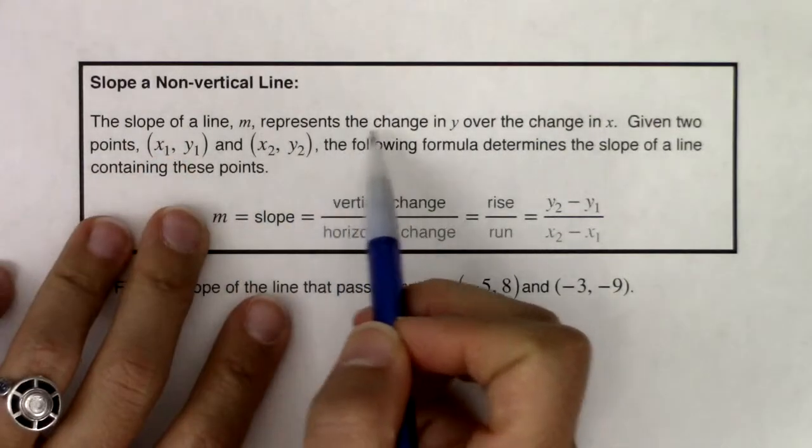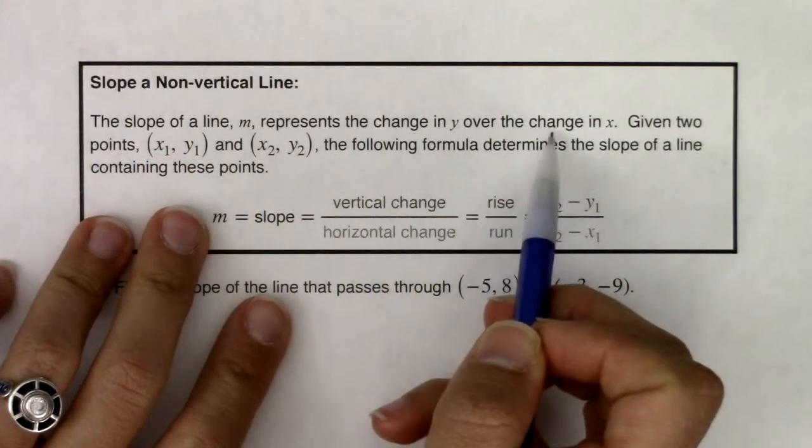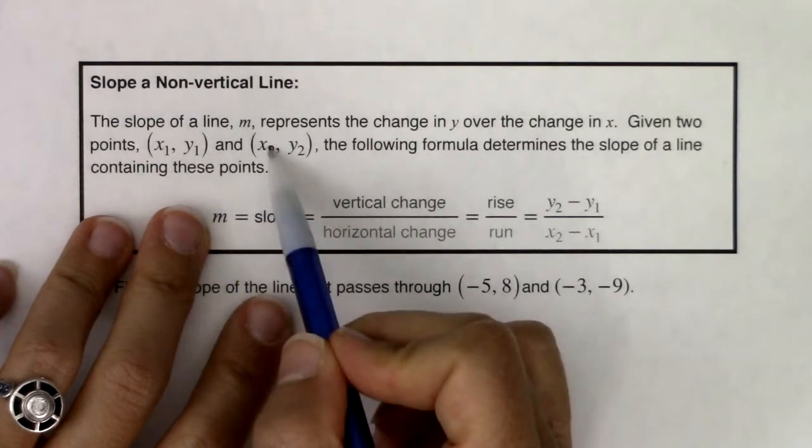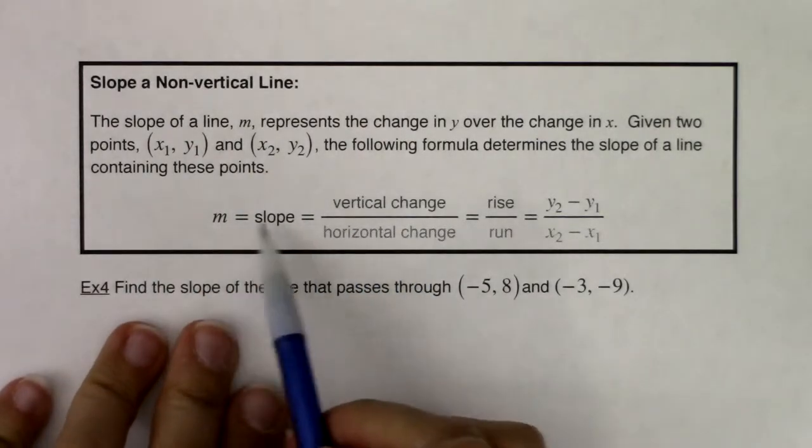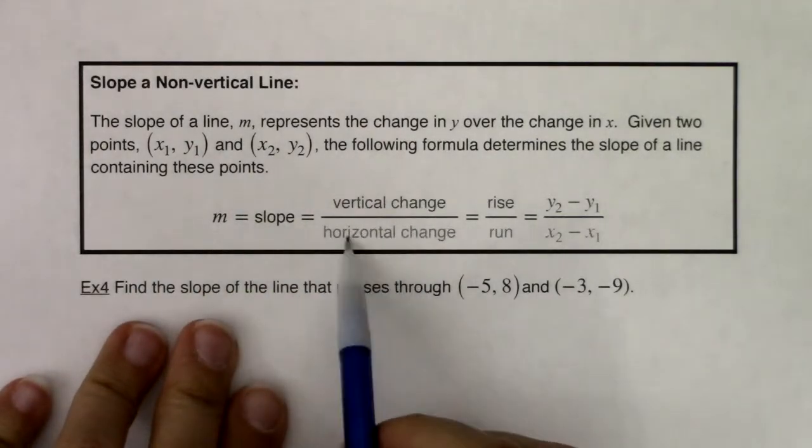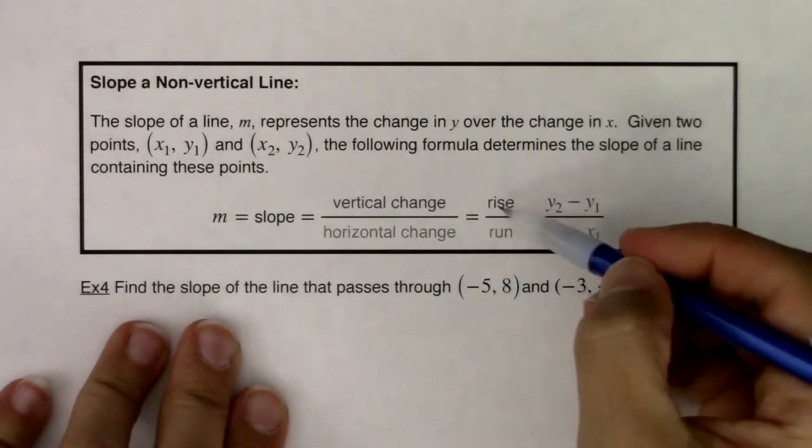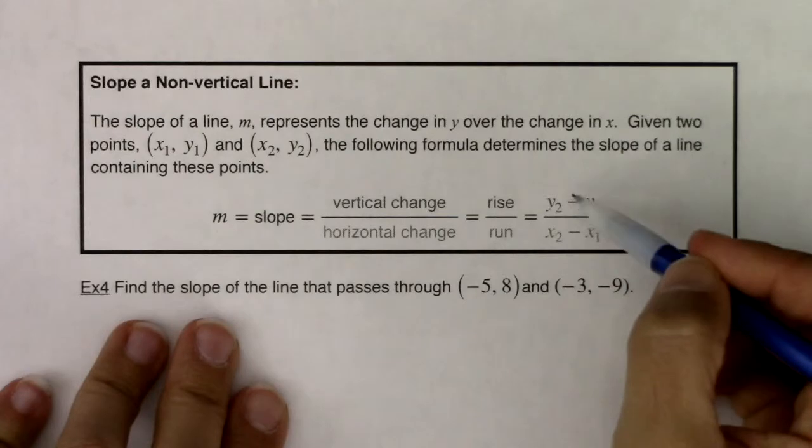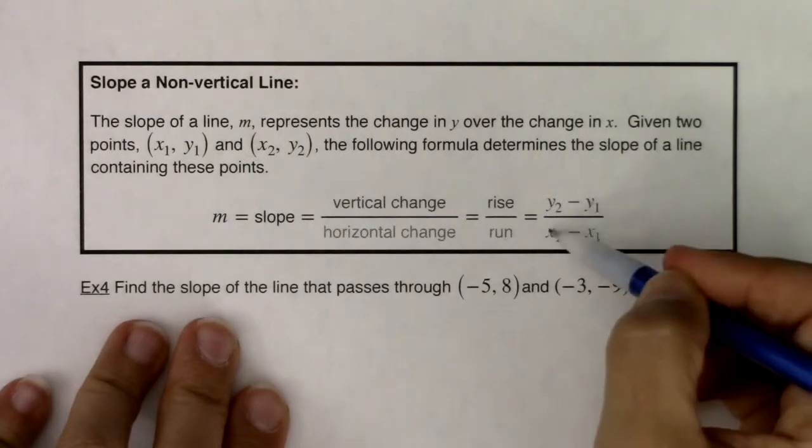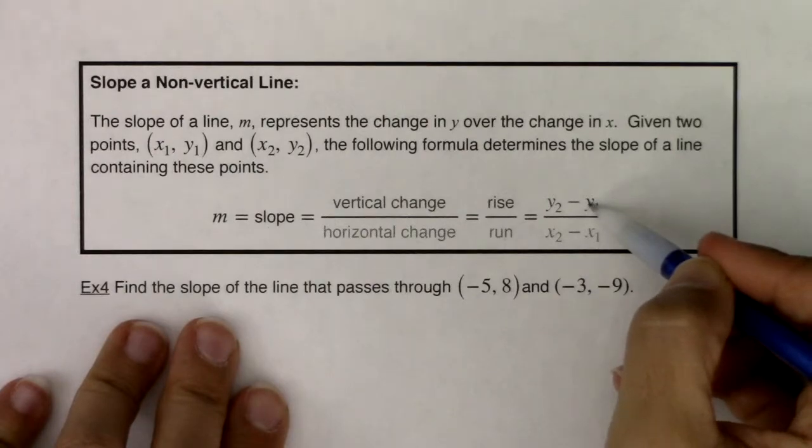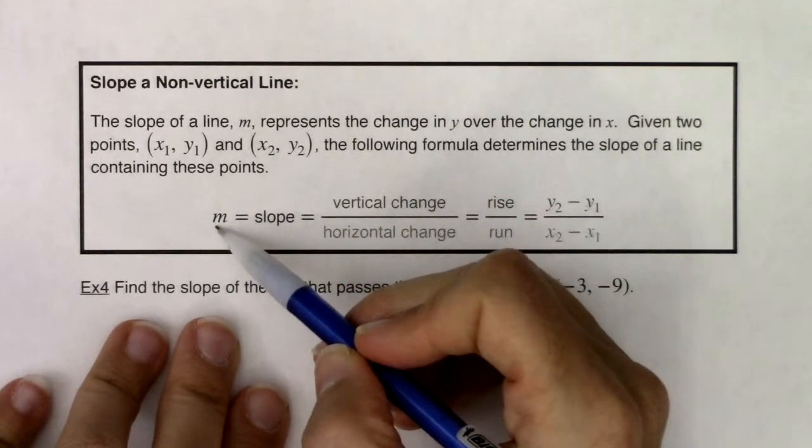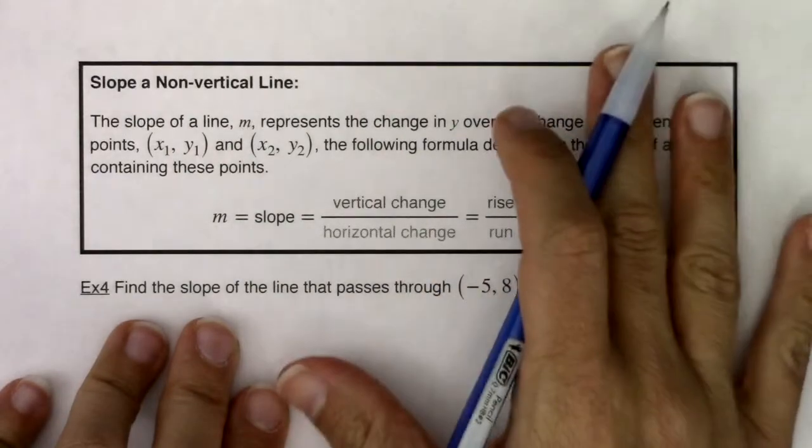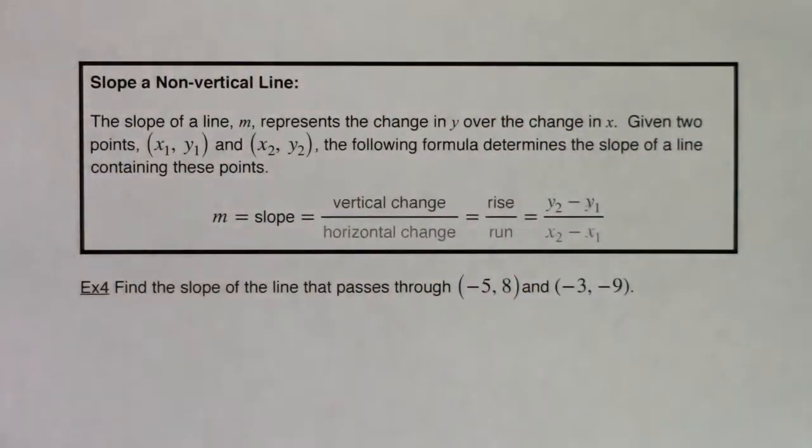represents the change in y over the change in x. Given two points and their coordinates, the following formula determines the slope of a line containing these points. So we have m is our slope. We'll talk about vertical change over horizontal change. Maybe you've heard that phrase rise over run. But here's that formula: y sub 2 minus y sub 1, x sub 2 minus x sub 1. So change in y's, the difference in y's in ratio to the differences in your x's. And in math, we tend to use the letter m for slope. When we get to stats, we'll use the letter b.